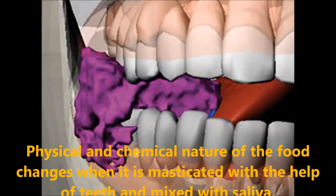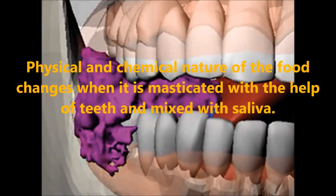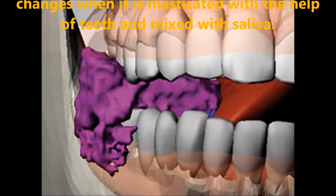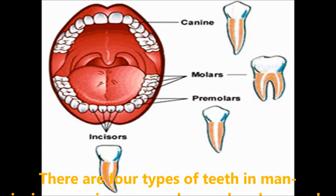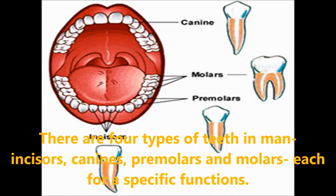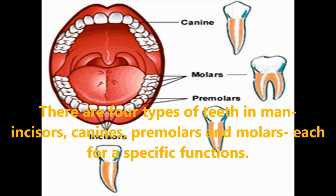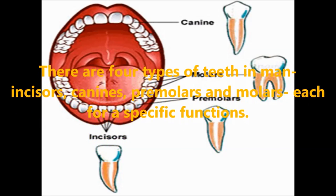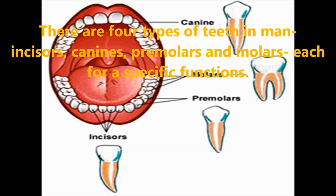The physical and chemical nature of food changes when it is masticated with the help of teeth and mixed with saliva. In the mouth there are four types of teeth present in human beings. They are incisors, canines, premolars and molars.